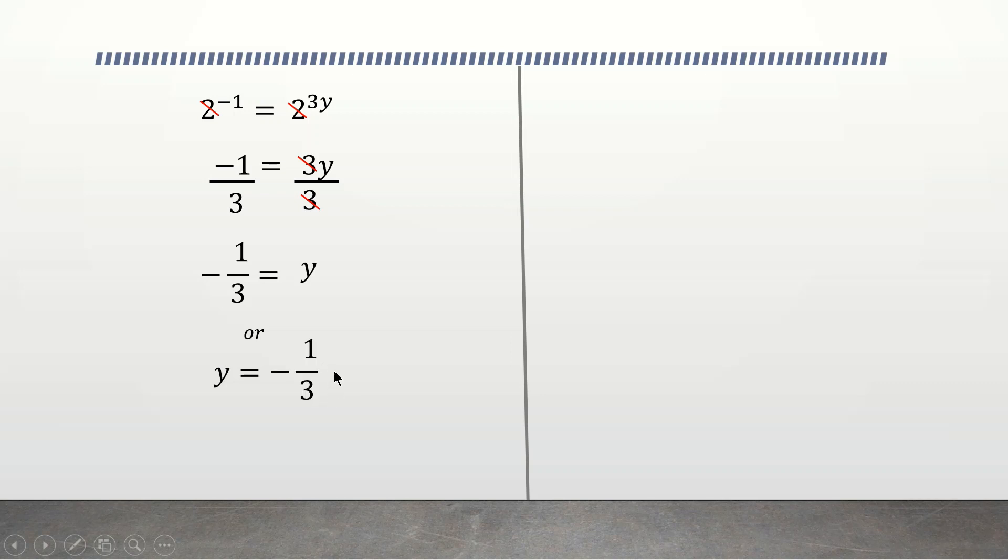This is our final answer. So therefore we can say that log 0.5 base 8 is equal to negative 1 over 3. That is our final answer.